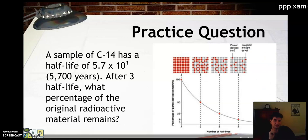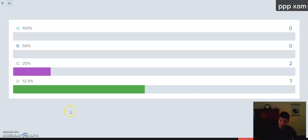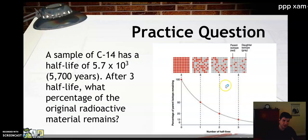Another practice question. A sample of C-14 has a half-life of 5.7 times 10 to the third. If you remember scientific notation, you know that's 5,700 years. After three half-lives, what percentage of that original C-14 will remain? I'm having trouble today with the access. But if we take a look at our answers here, yeah, 12.5%. So again, how does that work? Start off with 100%, cut it in half once. That's our first half-life, we're at 50%. Cut it in half again, we're at 25%. Cut it in half again, we're at 12.5%.